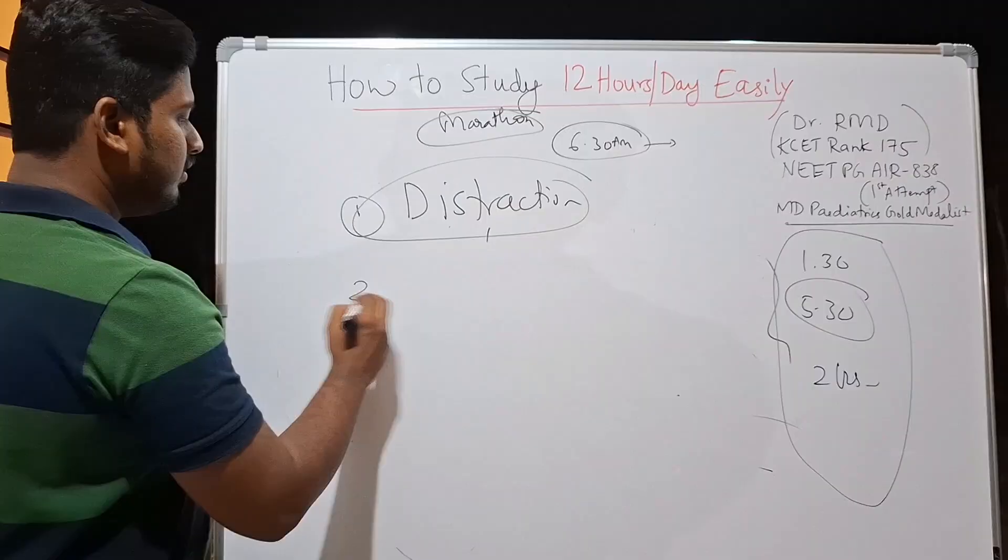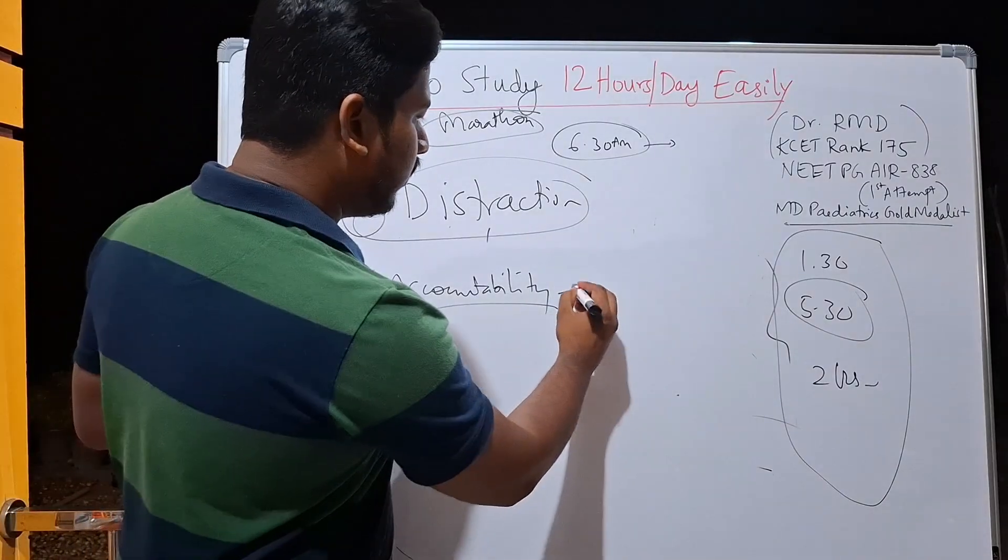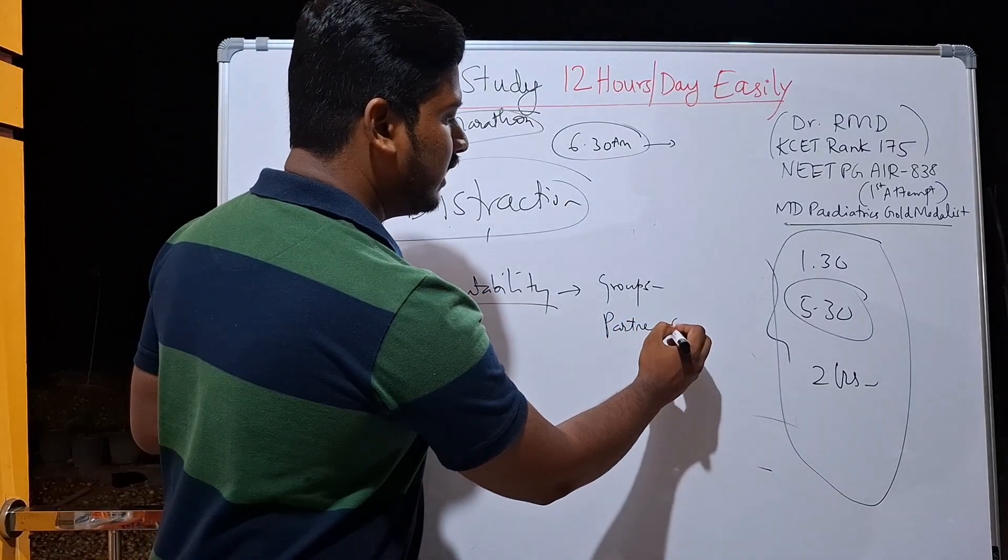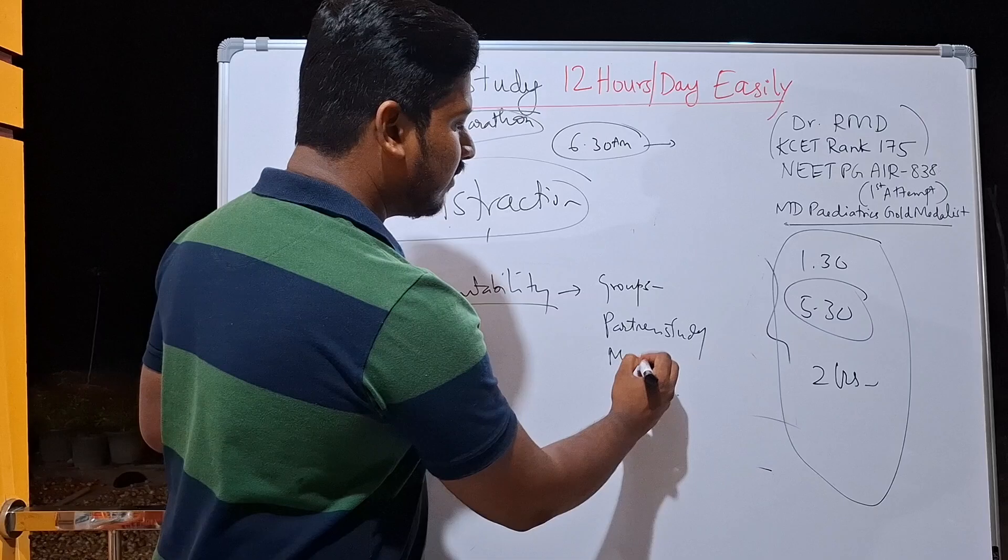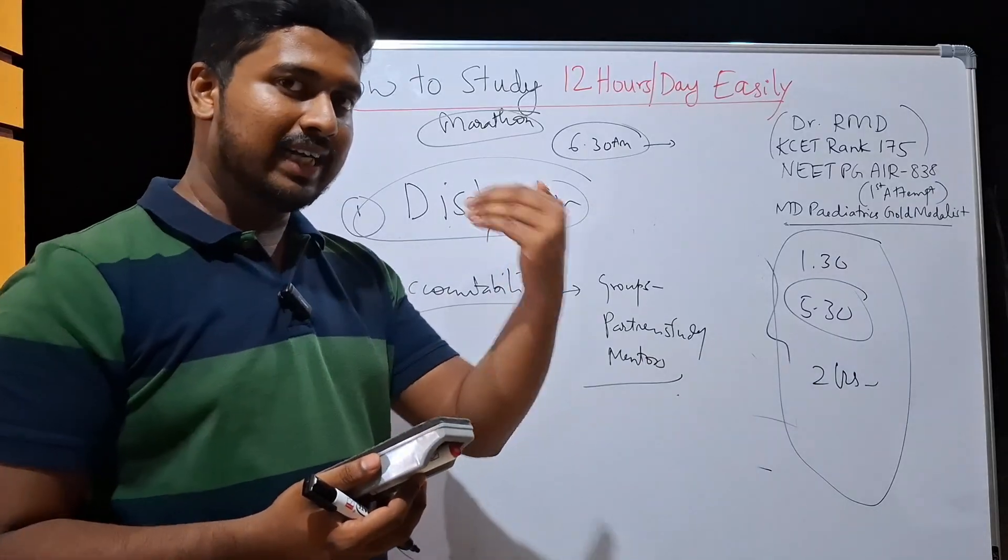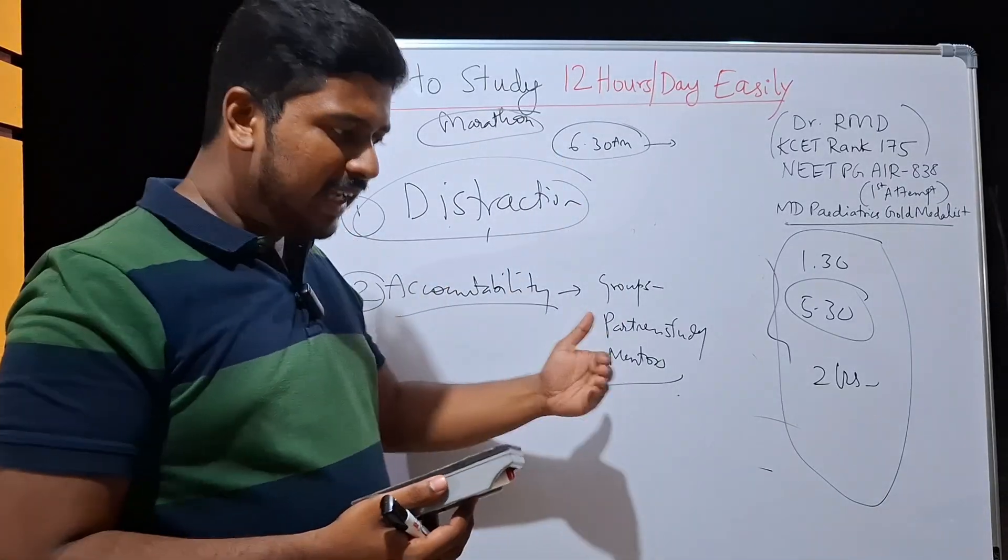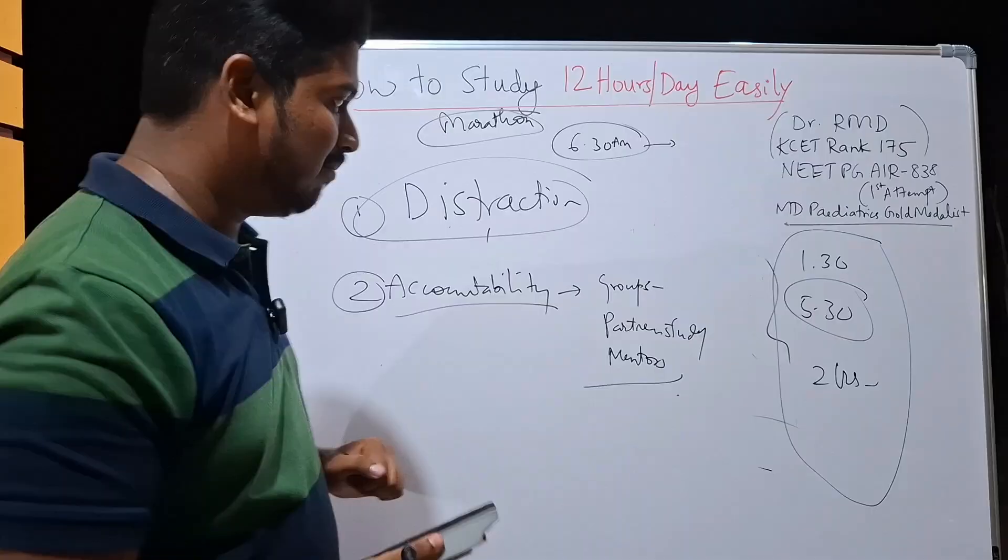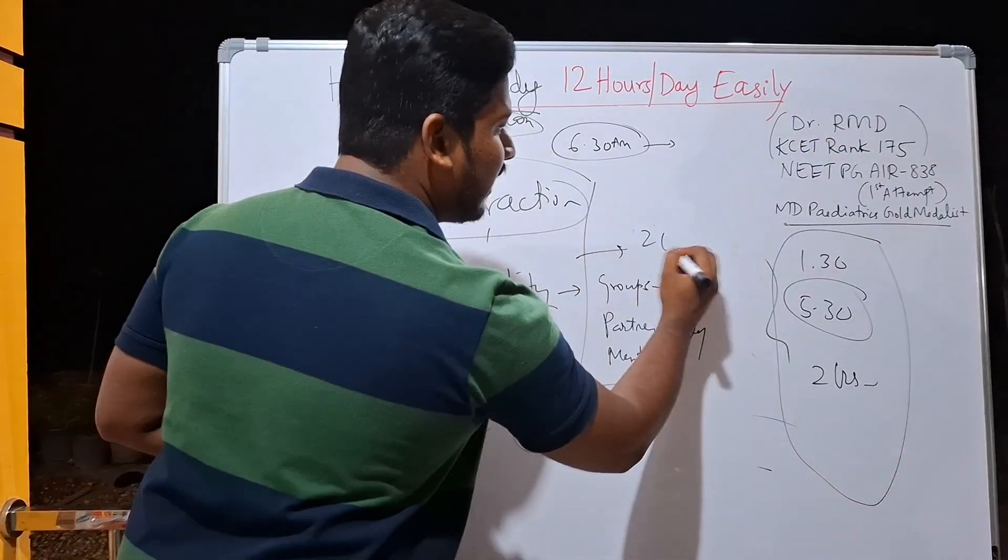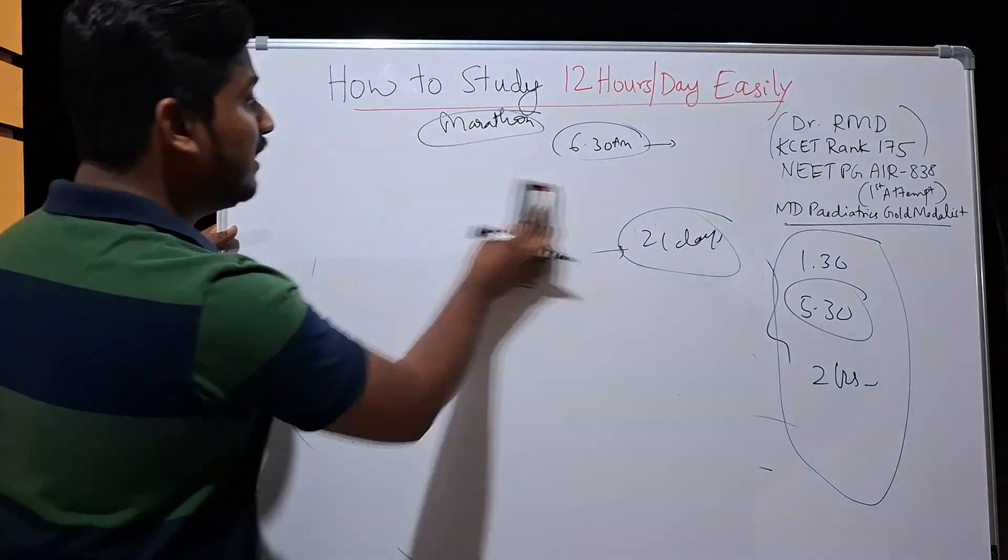Second problem is accountability, which means you need to be accountable that you have studied. So what to do? You have to join some groups, study groups, or you should have some study partners, partners for study, or you should have some mentors. Just like how I am doing YouTube Live Mentorship, where I take accountability from students for studying these many hours per day and the topics that I give, they must finish at the end of the day. Similarly, you can join some group or some schedule or some form of program where you are made accountable to finish those topics on time. If you do this along with the schedule that I had given, believe me, once 21 days are completed, no one can absolutely beat you. No one can even touch you and you'll notice a visible difference within you.